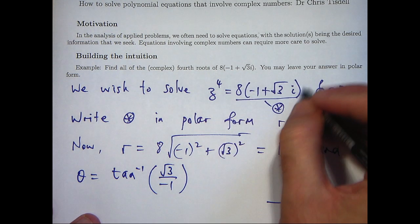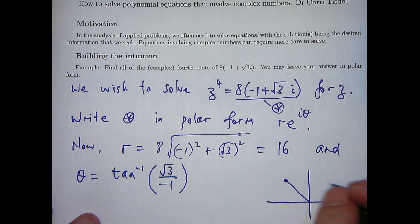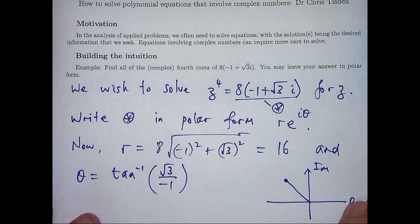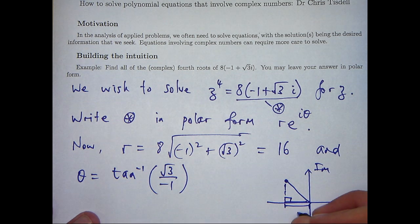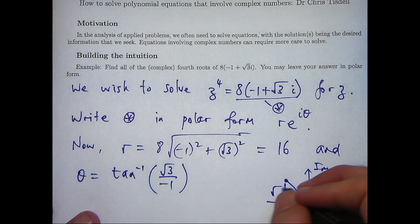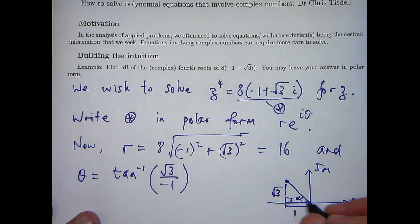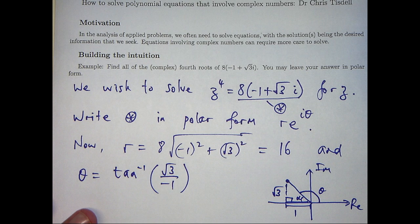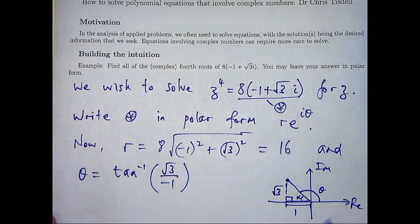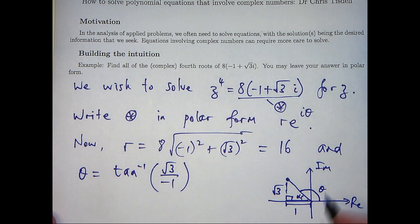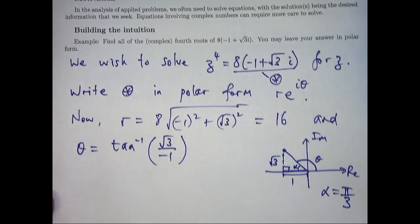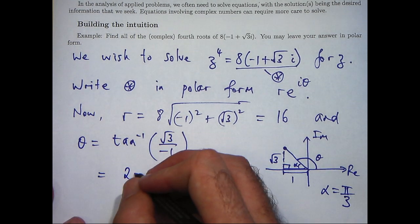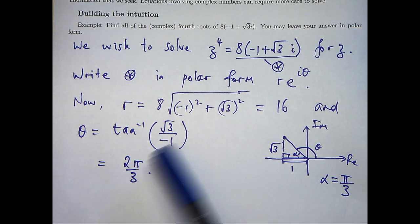Now this complex number is going to lie in the second quadrant. I can draw a little right-angled triangle and then use basic trigonometry. If this angle here is alpha, I'm interested in the theta there. Simple trig using the tan inverse will give me alpha equals pi on 3. So theta then will give me 2 pi on 3.